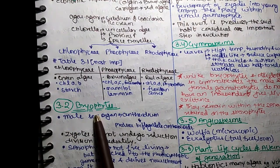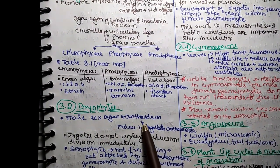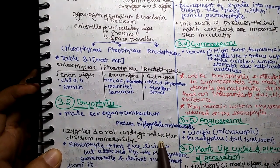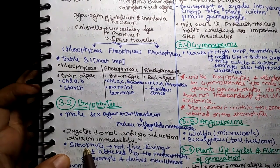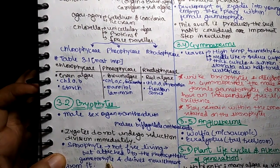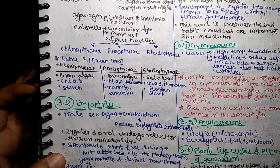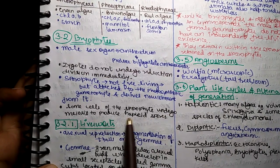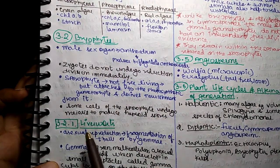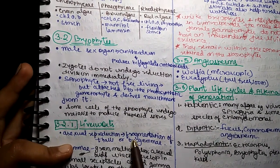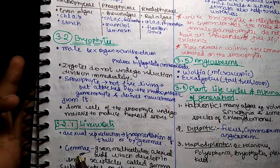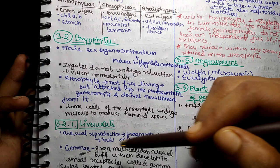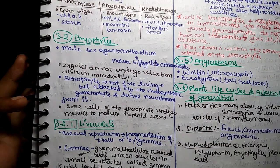Next subtopic is Bryophytes. In Bryophytes, the male sex organ is called Antheridium. They produce biflagellate antherozoids. The zygote does not undergo reduction division immediately. The sporophyte is not free living but is attached to the photosynthetic gametophyte and derives nourishment from it. Some cells of the sporophyte undergo meiosis to produce haploid spores. Bryophyte type — liverwort: asexual reproduction by fragmentation of thalli or by gemmae.